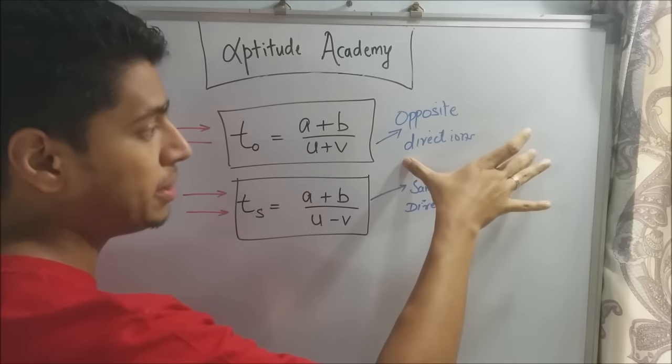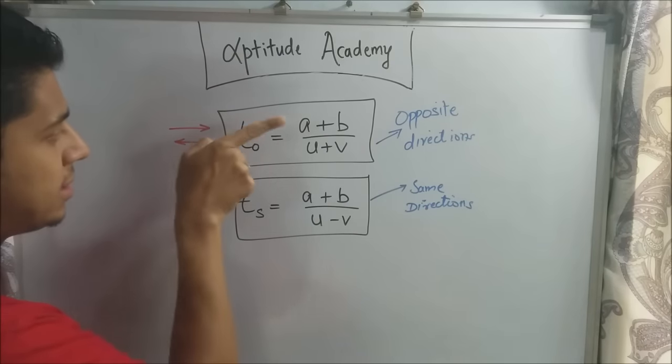Now this is when they are moving in the opposite directions and it is denoted by these arrows. One is this side and one is this side.